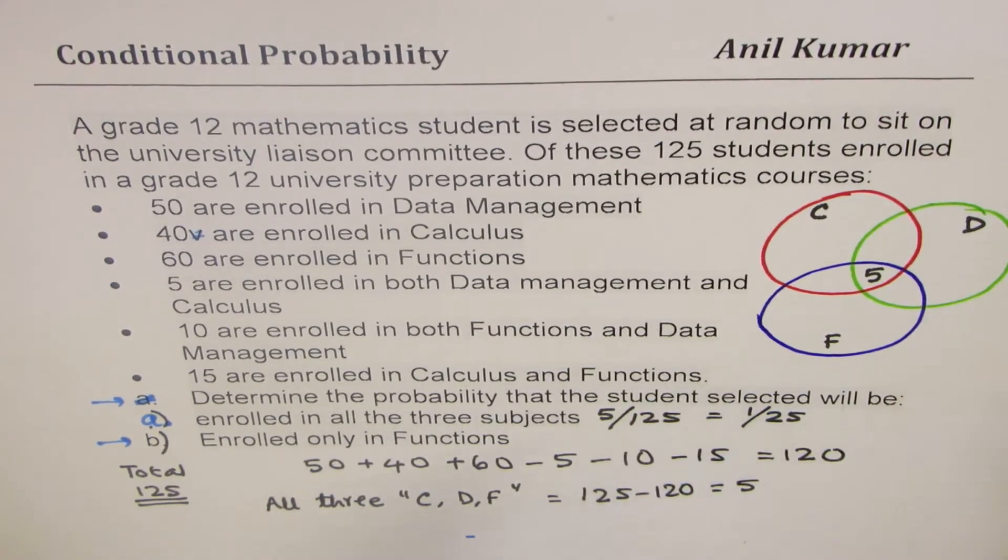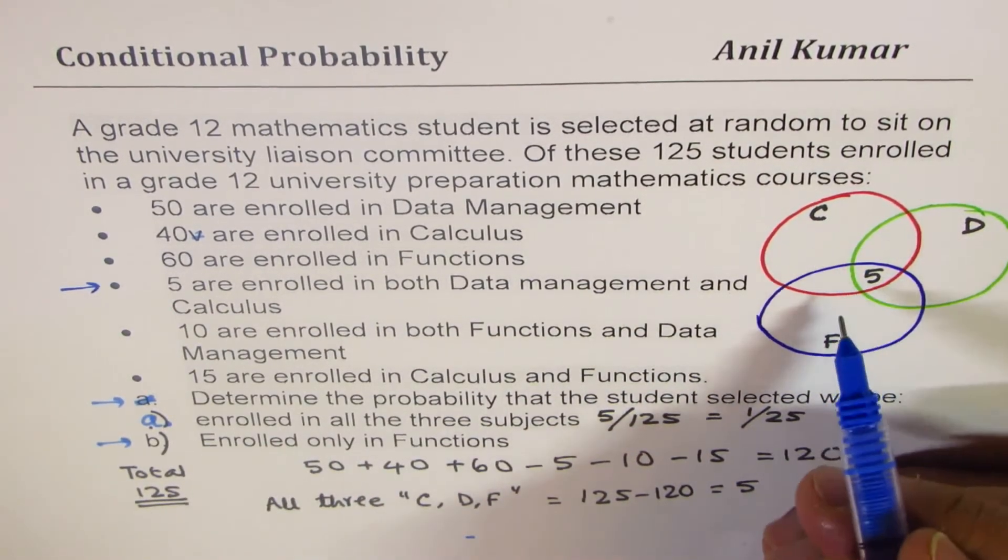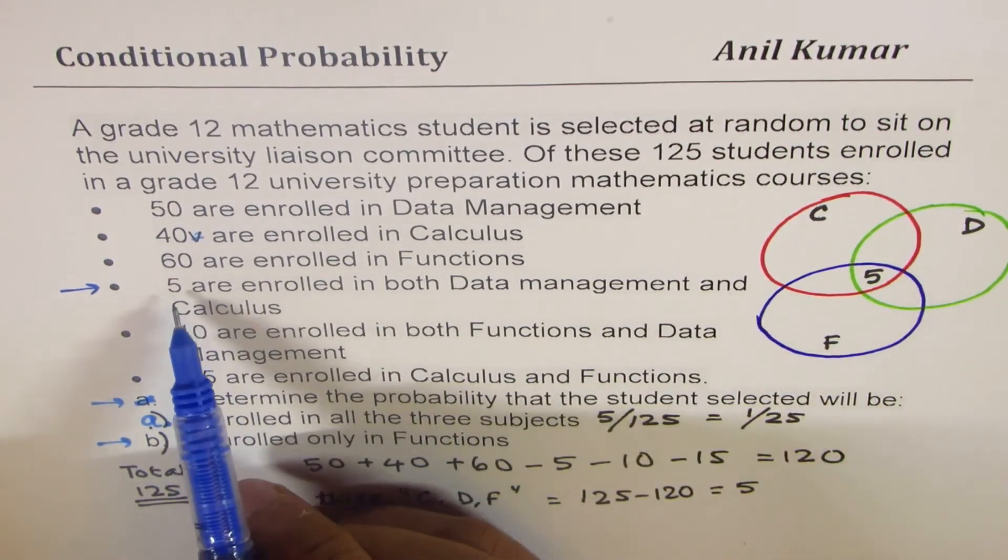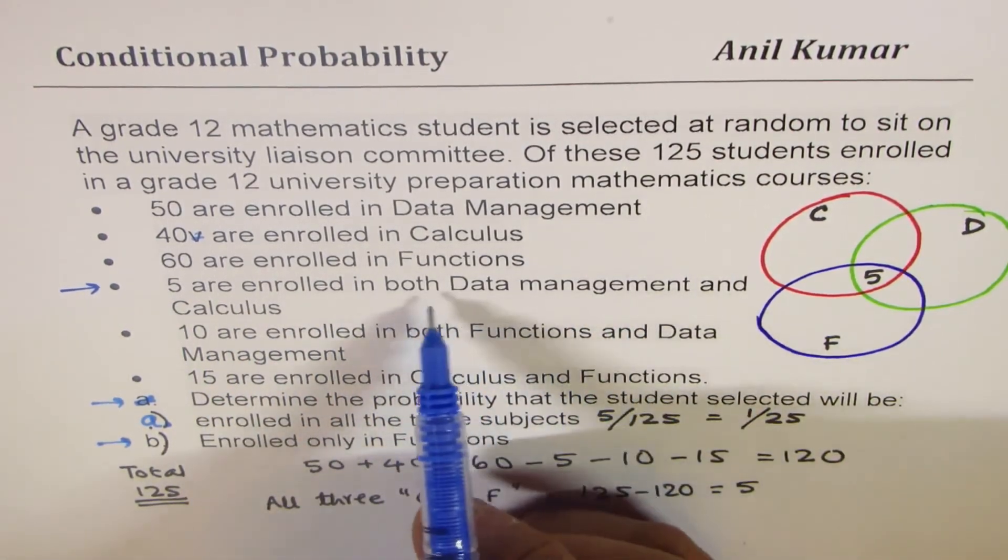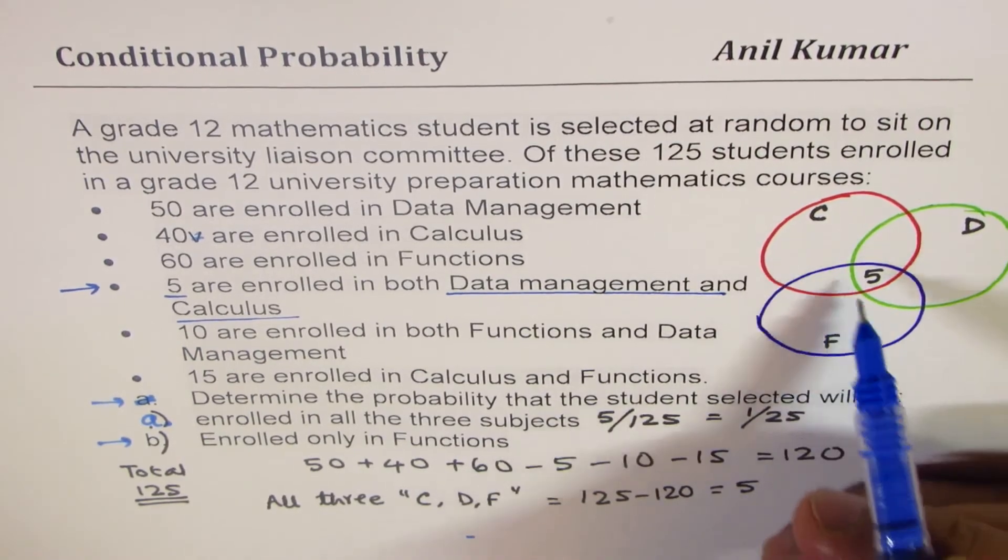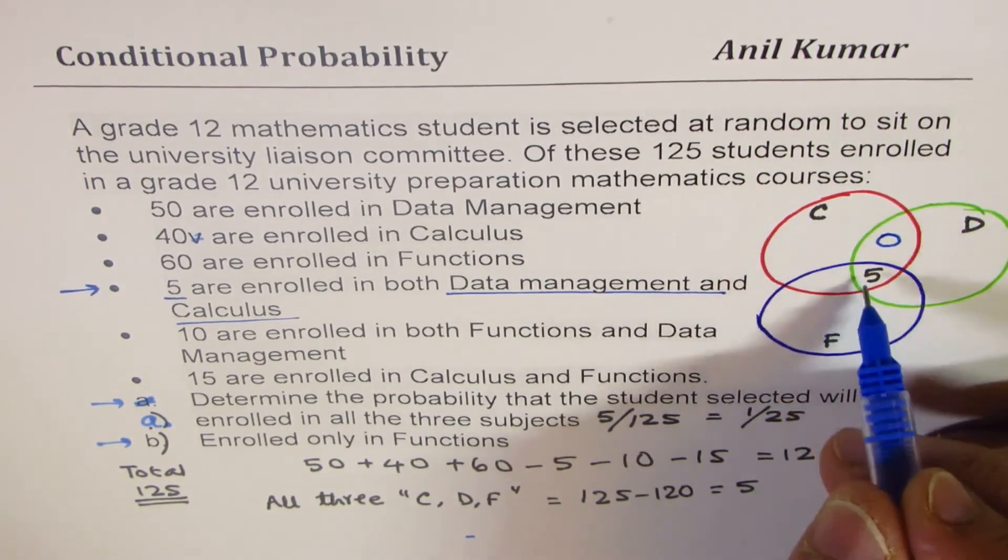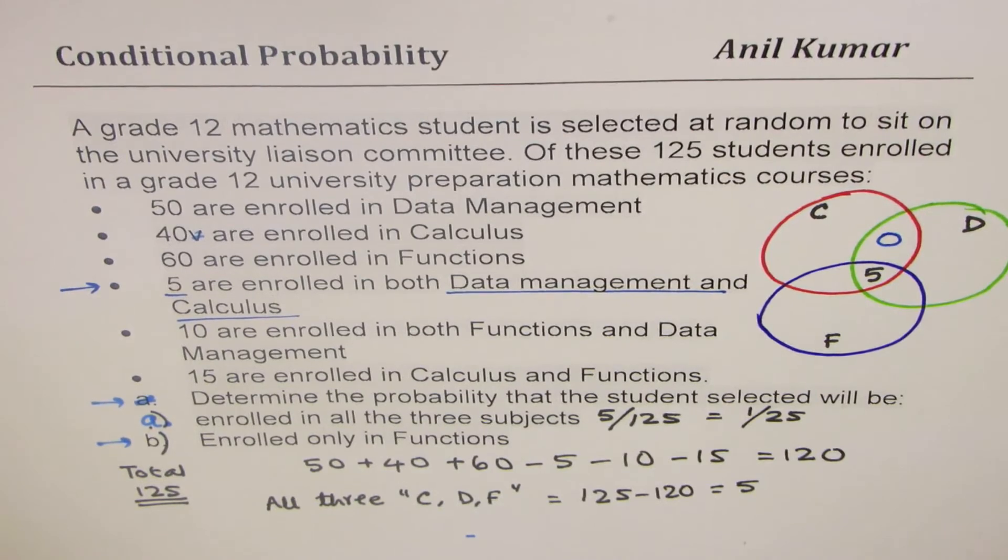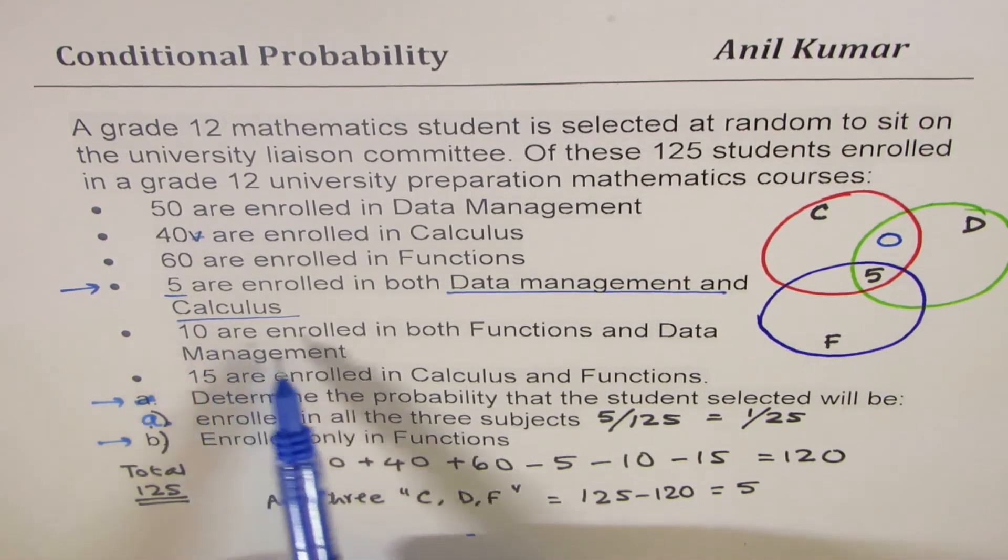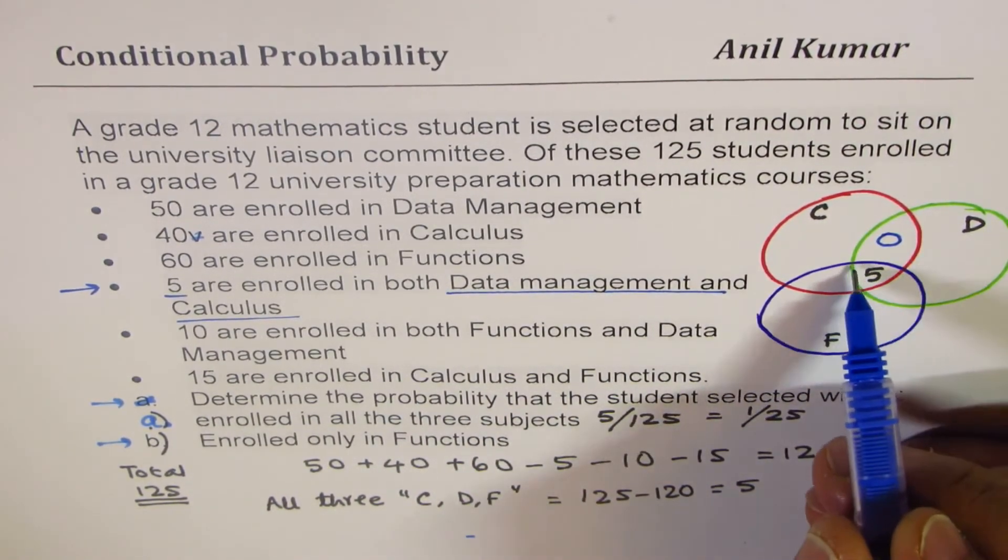Now, the second part is enrolled only in functions. For that, we need to work more details. Let's get into it now. First part, let's look into, we move from inside out. Five enrolled in both data management and calculus, which is already there, so that means zero here. This is common in data management and calculus. Second, ten are enrolled in both functions and data management, so ten in this group, that means this common group. Five is already there, so we'll add 5 more. So 5 plus 5, ten are common between functions and data management.